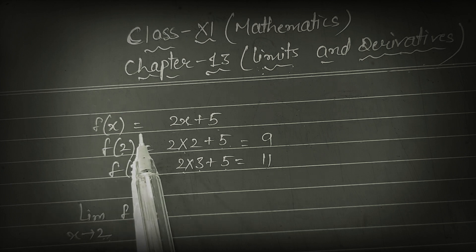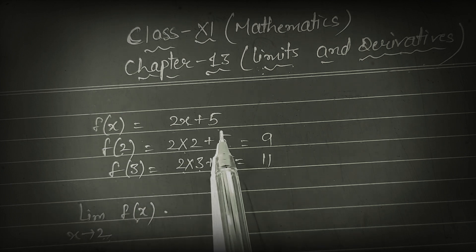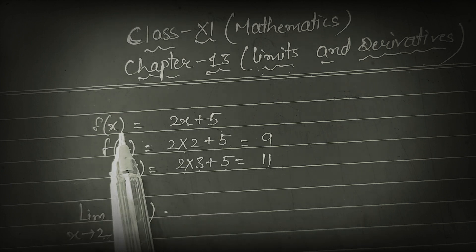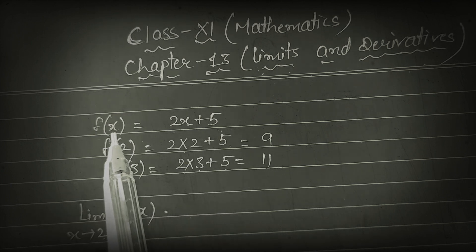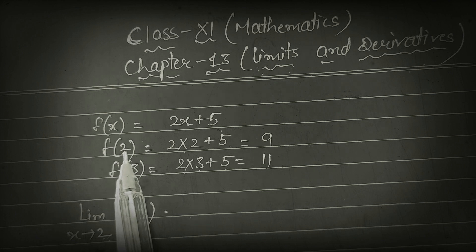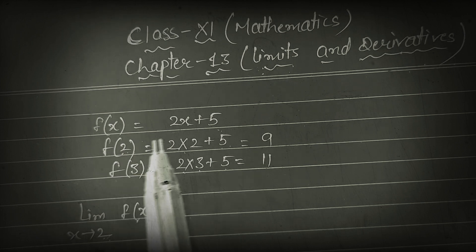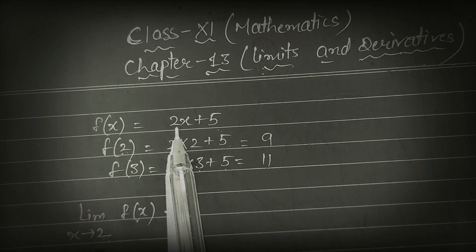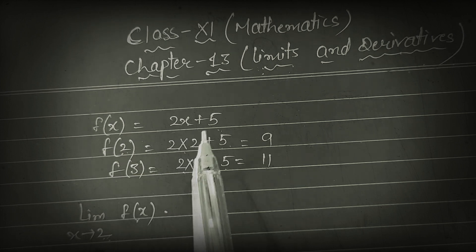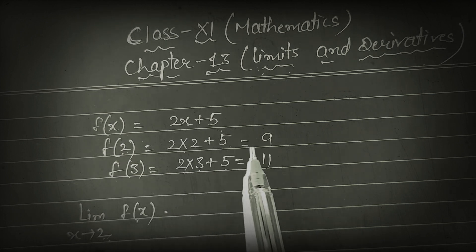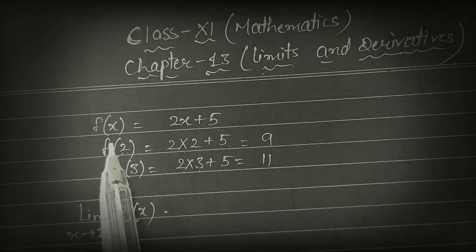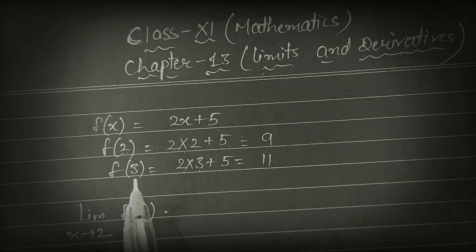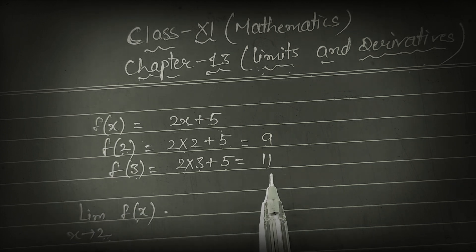Suppose f(x) = 2x + 5. If we want to find f(2), we put x = 2: 2×2 + 5, and we get 9. If we put x = 3, then we get 11.